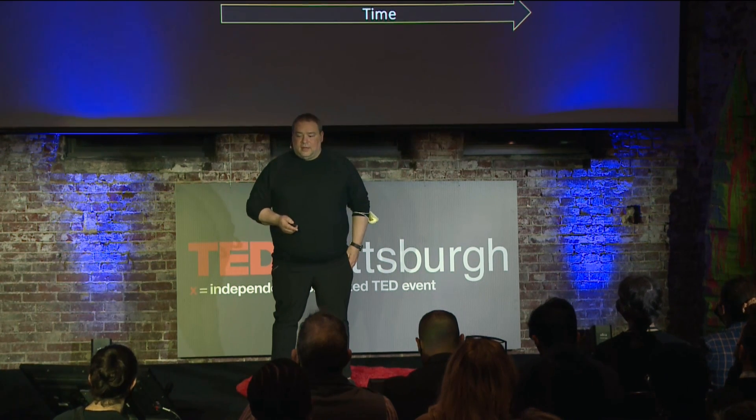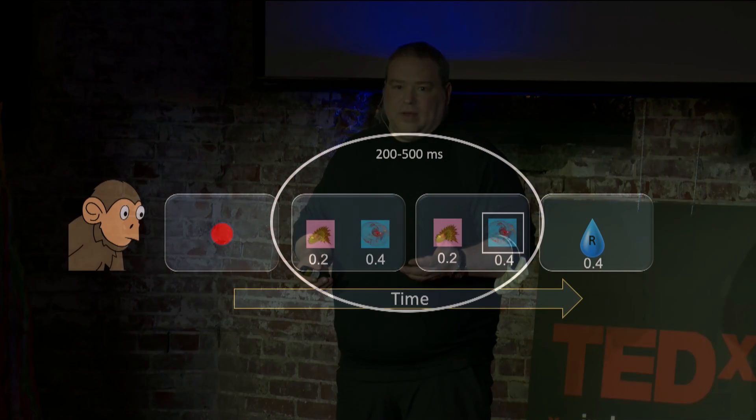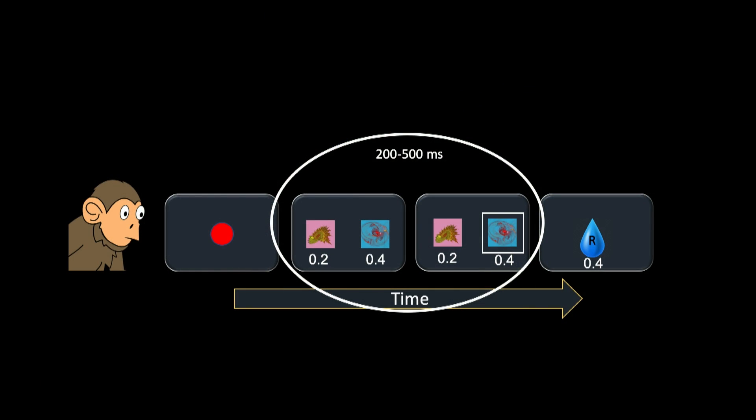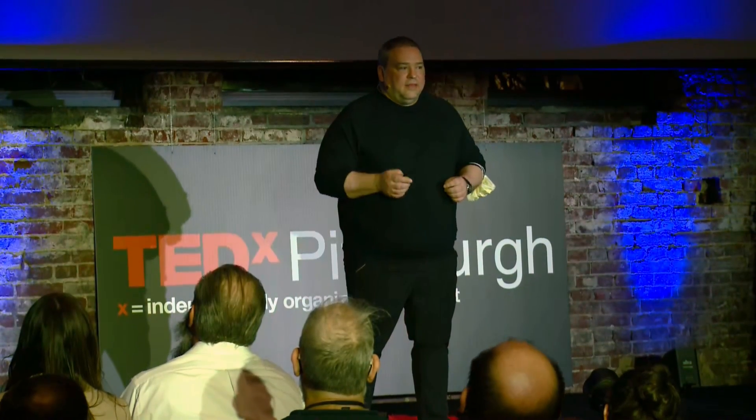In this case, 0.2 and 0.4 milliliters of juice. He chooses the bigger one. As you can imagine, this takes less than a second. So this is a good model of how we pick between two things, but not a good model of how we deliberate. What's really missing from this study is complexity.